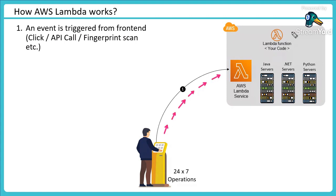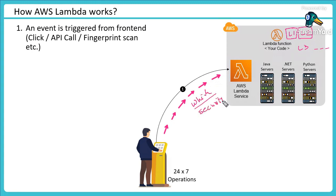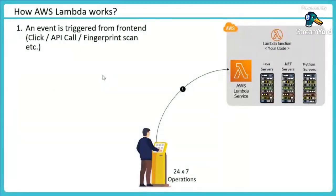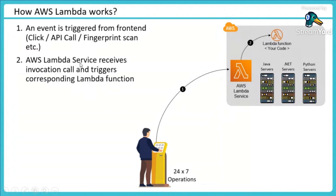You may have lambda 1, lambda 2, lambda 3, and so on, and you want to ensure only legitimate requests are triggering them. The service sends details about which lambda function to trigger and handles security — whether we are allowed to trigger that lambda function or not. So: first, an event is triggered from the front end — an API call, a fingerprint scan, etc. Second, the AWS lambda service receives the invocation call and triggers the corresponding lambda function.